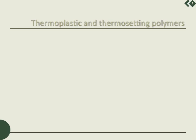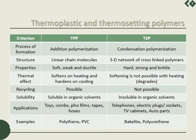Coming to the important category of thermoplastic and thermosetting polymers — let us see the differences between the two. On the basis of process of formation, thermoplastic polymers are the product of addition polymerization, whereas condensation polymerization results in thermosetting polymers. On the basis of structure, thermoplastics are linear chain molecules, whereas thermosetting polymers are 3D network or cross-linked polymers.